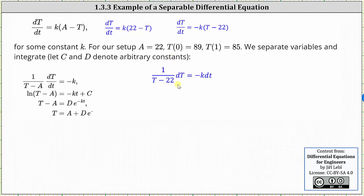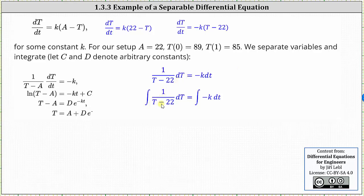We write the differential equation in differential form, or we can think of multiplying both sides by dt, which gives us one divided by the quantity big T minus 22, d(big T) equals negative K times dt. Now we integrate both sides of the equation. The integral of one divided by the quantity big T minus 22 with respect to big T is equal to the natural log of the absolute value of big T minus 22, plus a constant — but we'll include the constant on the right. On the right, the integral of negative K with respect to t is equal to negative Kt plus C.